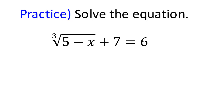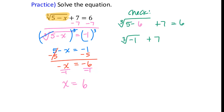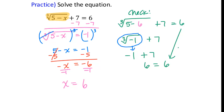Next example: cube root of (5 − x) + 7 equals 6. Solving gives x equals 6. Check: cube root of (5 − 6) + 7 = cube root of (−1) + 7. The cube root of negative 1 is negative 1, because (−1)(−1)(−1) = −1. So negative 1 plus 7 equals 6, and 6 equals 6. This solution is valid.